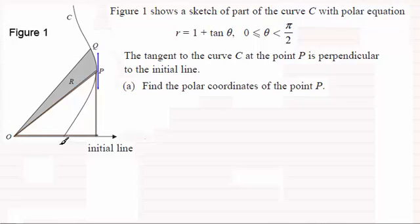Then if I call this distance X, we know that OP is R and we know that the angle from the initial line is theta. But what is so special about this is that X is at its maximum in this interval here.